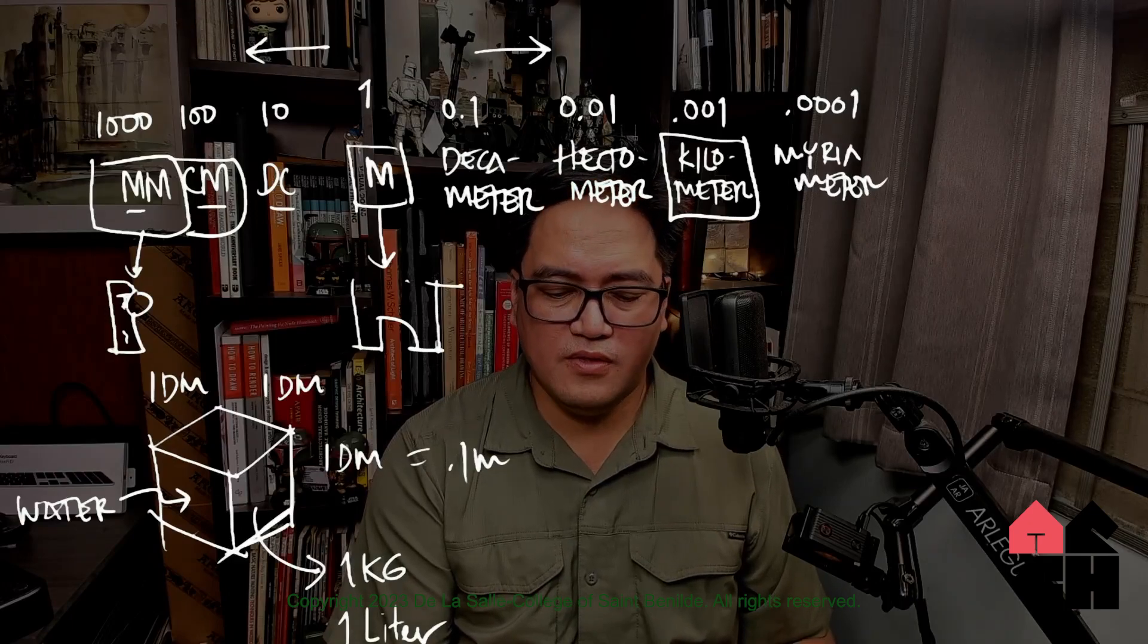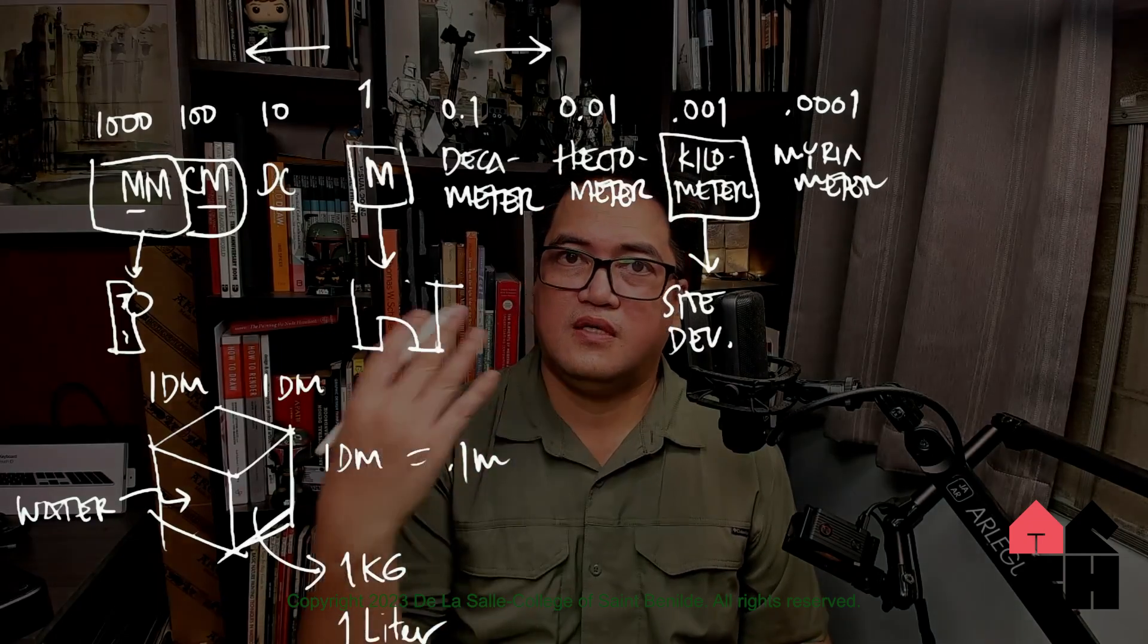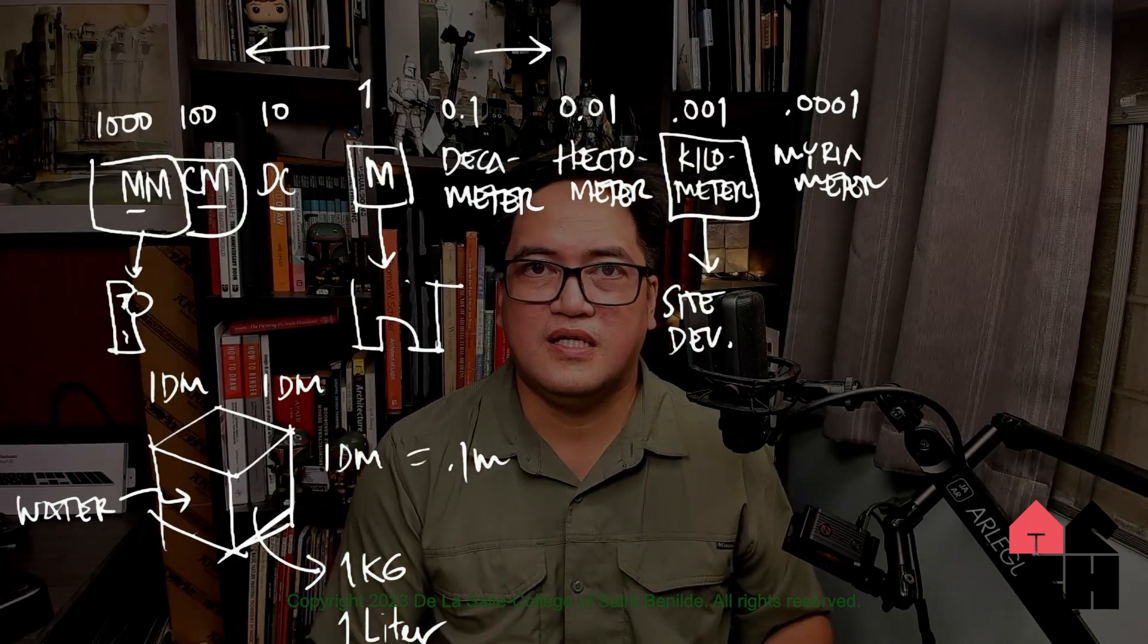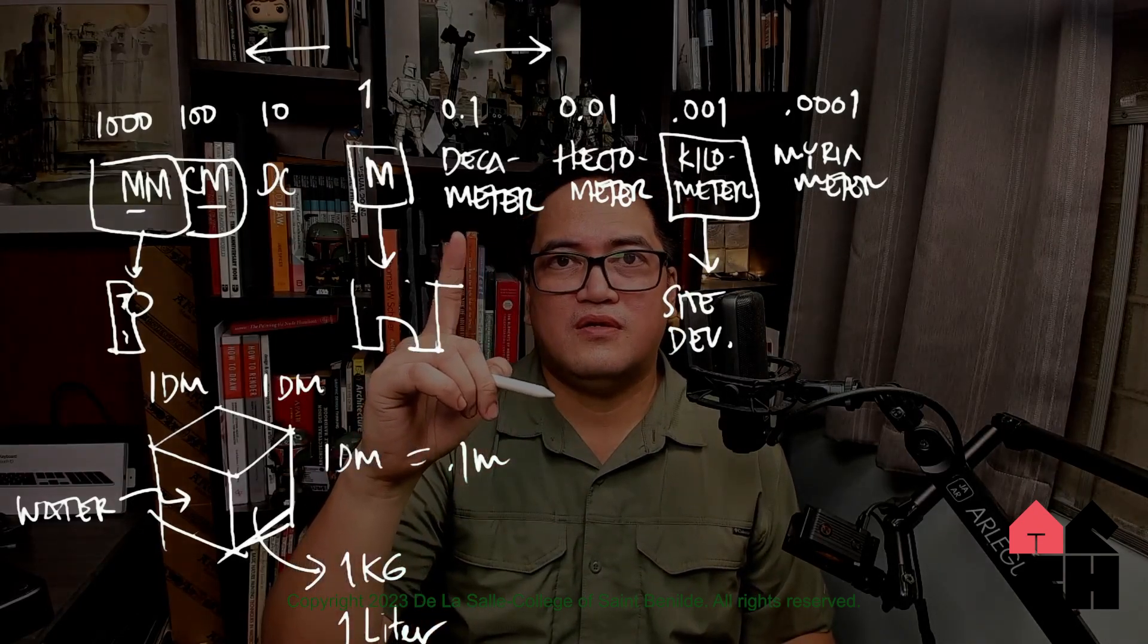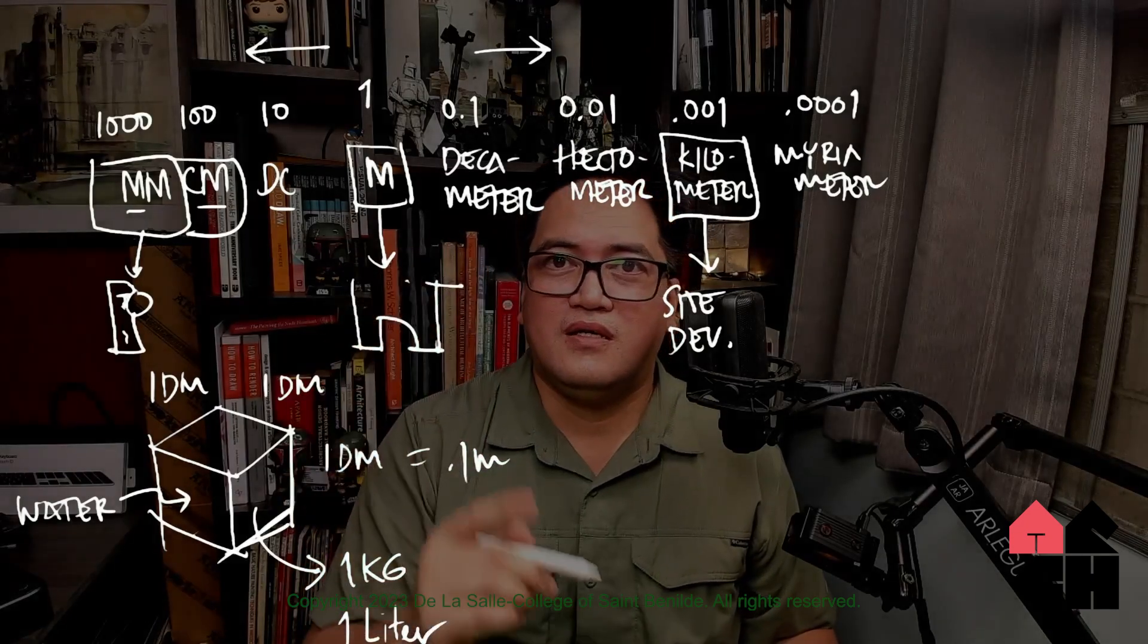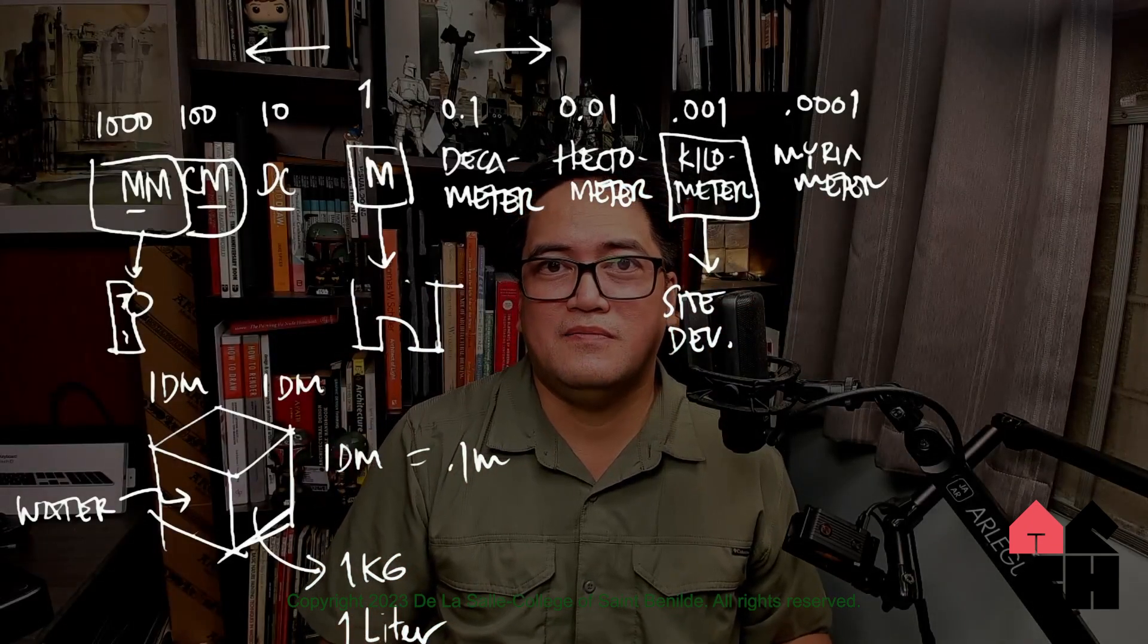Kilometers are mainly for site development, for long distances. In between these, like decimeter, hectometer, and even myriameter are not really used as often. That's a short explanation of how the metric system for distances works and the units or terminologies involved.